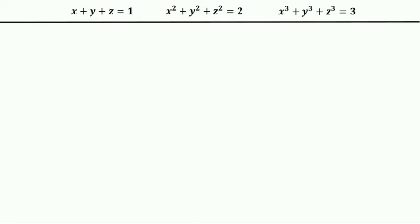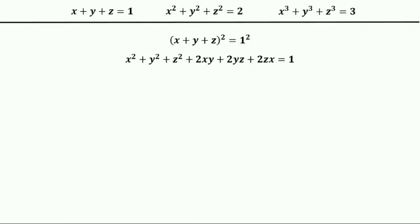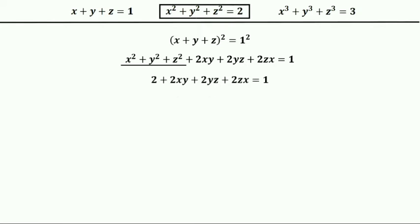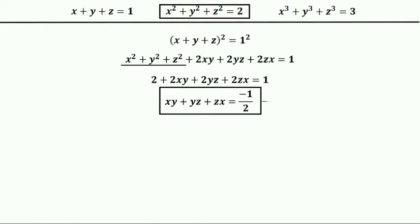Now I am going to square both sides of x plus y plus z. After using the (a+b+c)² formula we get this. Now substituting x²+y²+z² with 2, which we have given, we get 2 plus 2xy plus 2yz plus 2zx equals 1. So after simplification we get xy plus yz plus zx equals negative 1 by 2. Let this be our equation one.